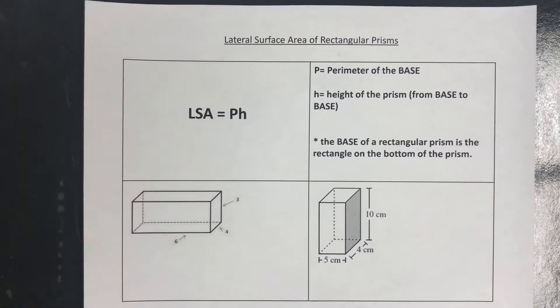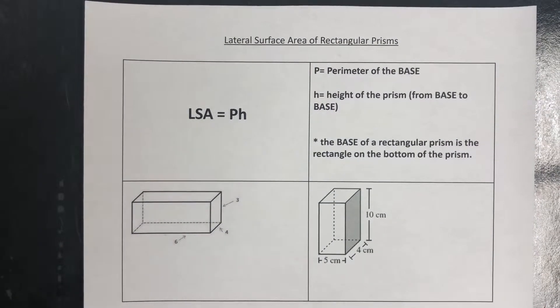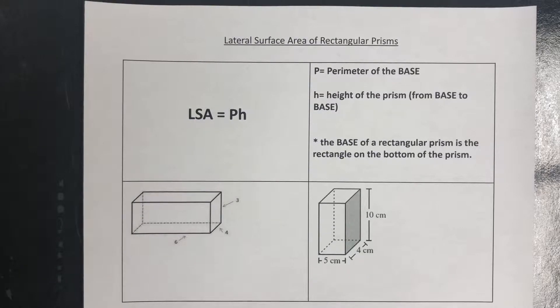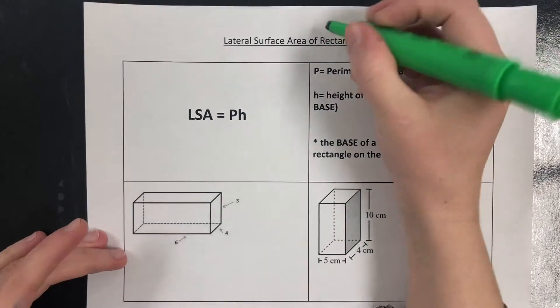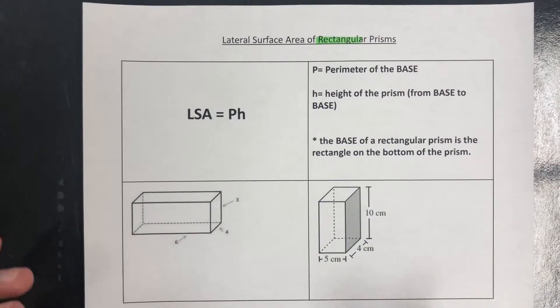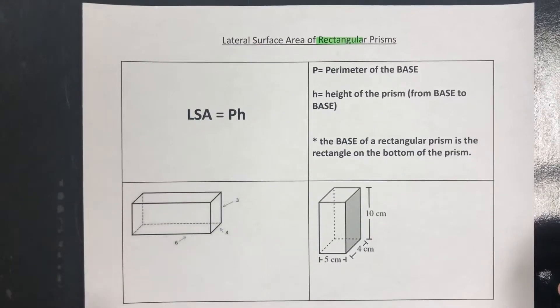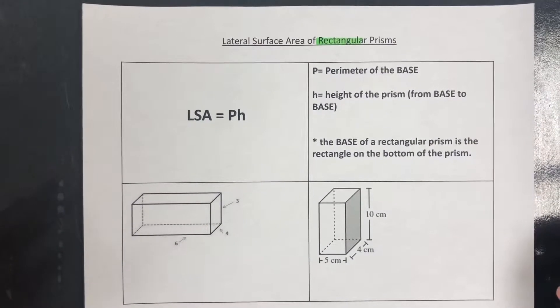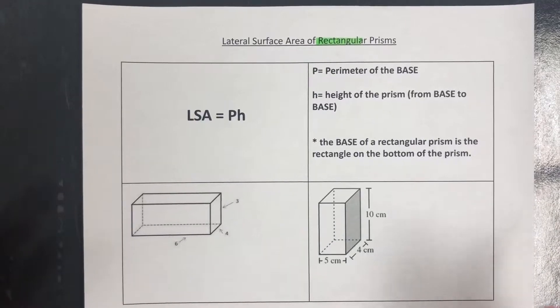All right, here we go again. We just did total surface area of rectangular prisms, so now we're going to look at the lateral surface area of rectangular prisms. Rectangular prisms have six sides to them, and when we're looking for the lateral surface area, that means we're not considering the bases of the shapes anymore. We're only taking those lateral faces.